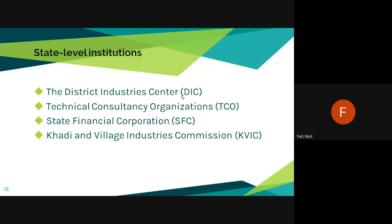But even after finding that new market, he cannot be happy forever. After another five years he needs to think something else - either change the product or find a new market. That is the basic rule of business: every three to five years your business should grow in some way. This is the kind of guidance and entrepreneurship training that District Industries Centers provide. We need to make use of both central level and state level institutions.